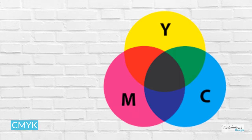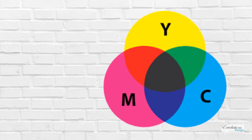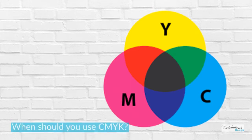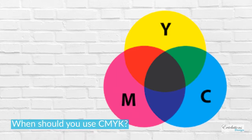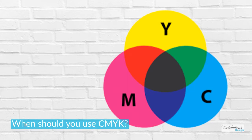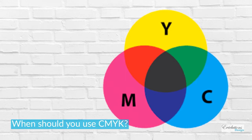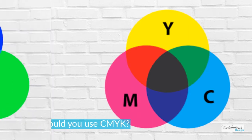CMYK offers fewer color options and variations than RGB. Use CMYK anytime you plan to print something rather than view it on a screen. Projects include product packaging, signage, stickers, business cards, flyers, and brochures. You will even use it for branded merchandise and promotional items such as pins, buttons, clothing, and so on.